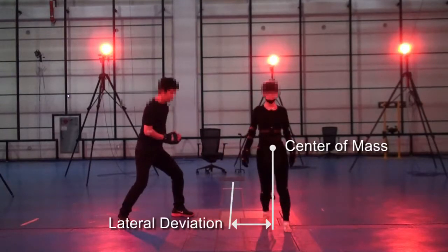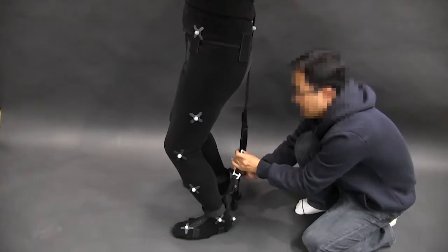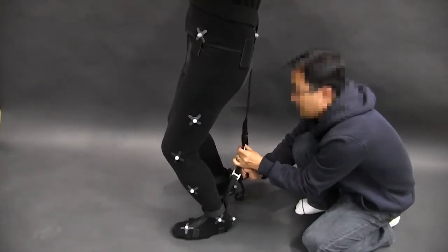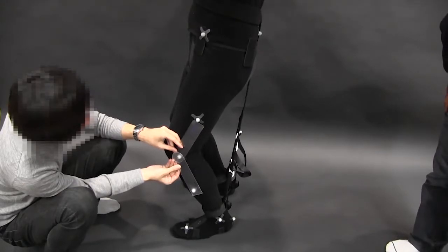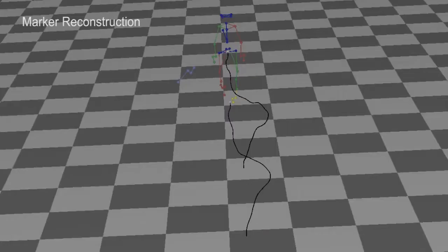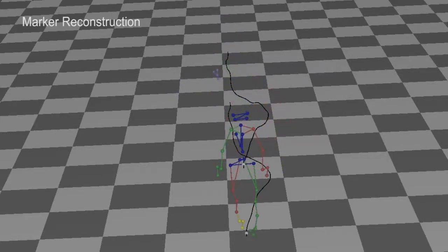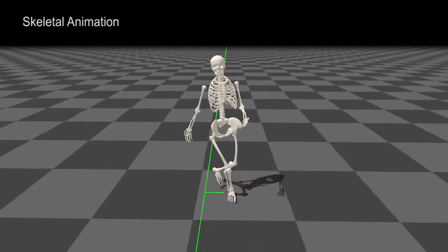The lateral detouring measures how well a subject recovers its balance against external perturbation. The participants wore tight suits and retro-reflective markers appropriate for optical motion capture and adjustable straps to reinforce crouch walking. The motion capture system reconstructed three-dimensional marker positions and estimated skeletal animation from the markers.